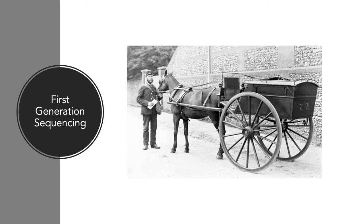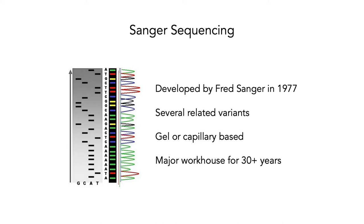To start with, we're going to take a bit of a dive back into history and look at first generation sequencing. Although there were a number of sequencing methods that were developed, the primary one that has been used for a very long time is Sanger sequencing. This was developed by Fred Sanger in 1977. It has several variants that have been used over time — originally gel-based, more recently capillary-based and more automated — but regardless of how it's been implemented, Sanger sequencing has been the major workhorse for at least the last 30 or so years.